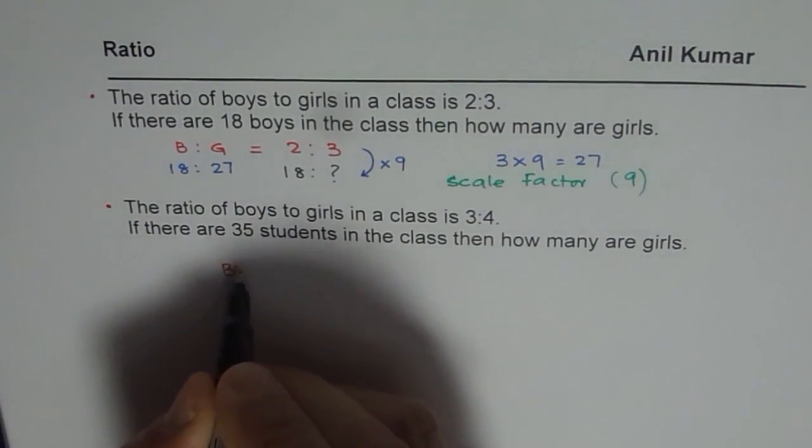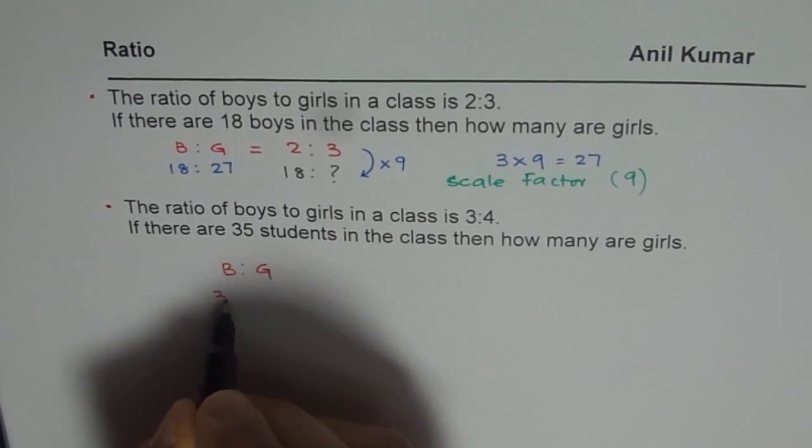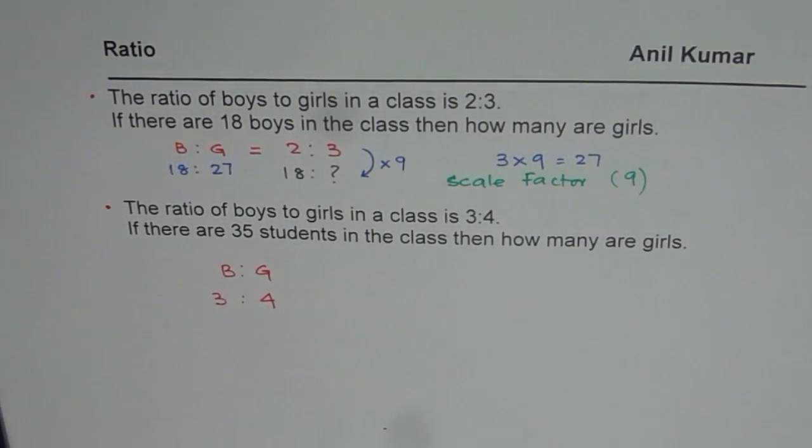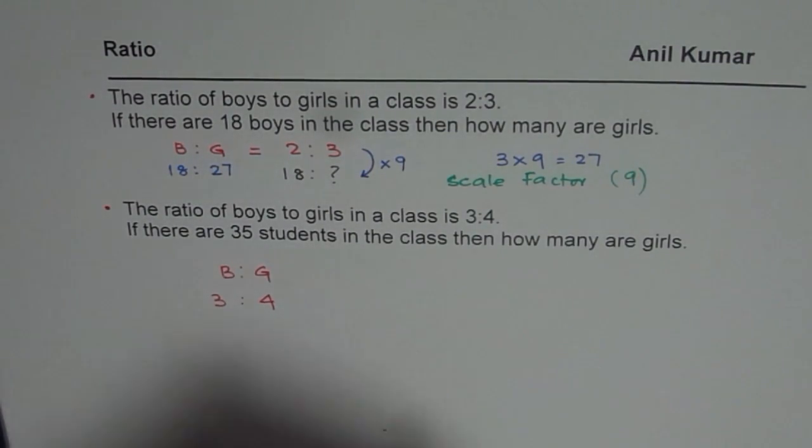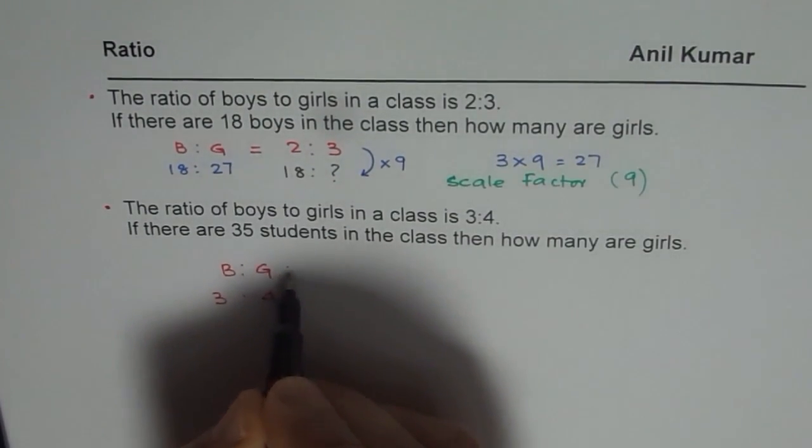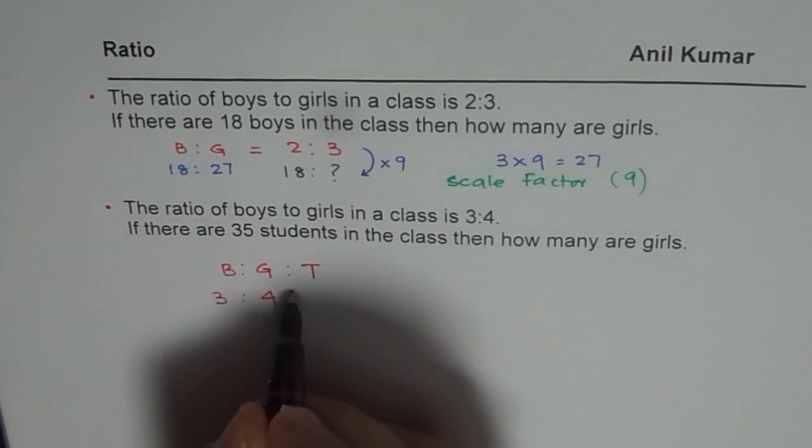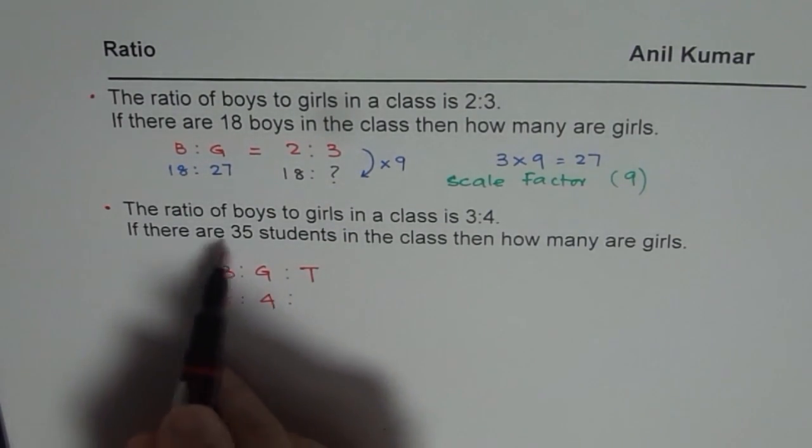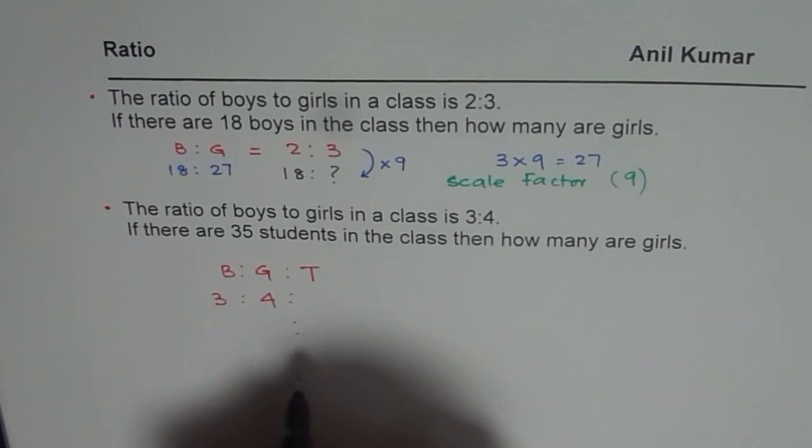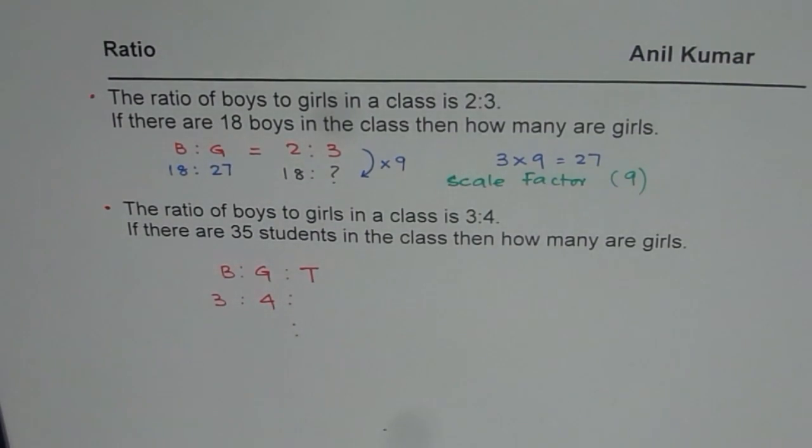Now in such questions we have to look into ratio slightly differently. We know the ratio of boys to girls is 3 is to 4. But what are we given? We are given the total number. So let us add one more ratio here and that is the total number. Total of boys and girls given to us is 35.